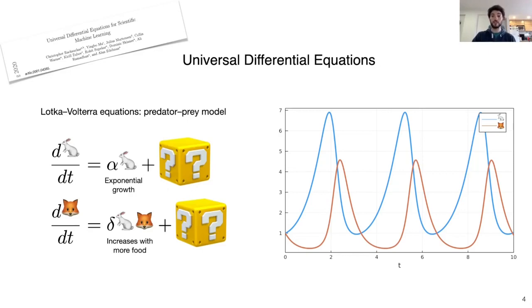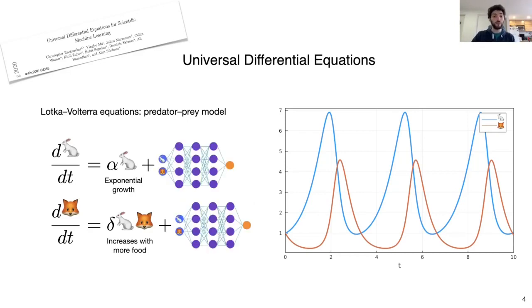The proposal of the universal differential equation is to use universal approximators such as artificial neural networks to learn the unknown parts.